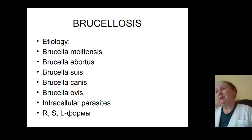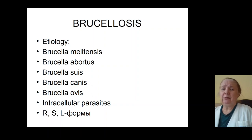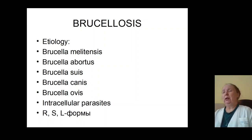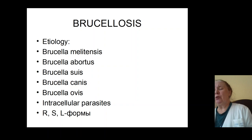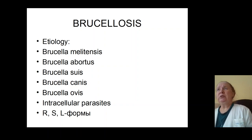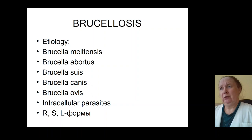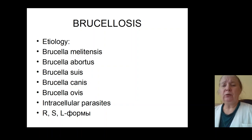Bacteria are very variable and cause the formation of R, S, and L forms — mutations of bacteria. This causes the formation of latent, progradient, and chronic forms of infection.